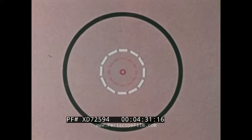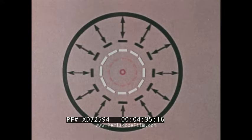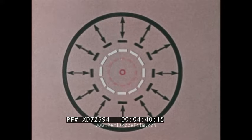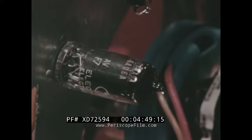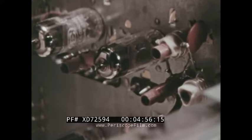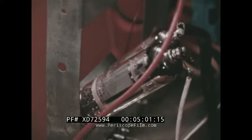Other grids can be added to do various jobs. For instance, we can add an extra grid to the tetrode to stop a reverse flow of electrons from the plate. This is a suppressor grid, and the tube is now called a pentode because of its five electrodes. The pentode is one of the most commonly used tubes in modern radio and television sets — in the RF stage as a voltage amplifier, and in the power output stage as a power amplifier.